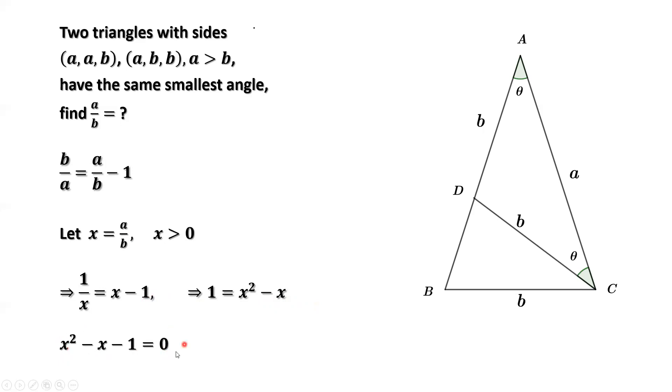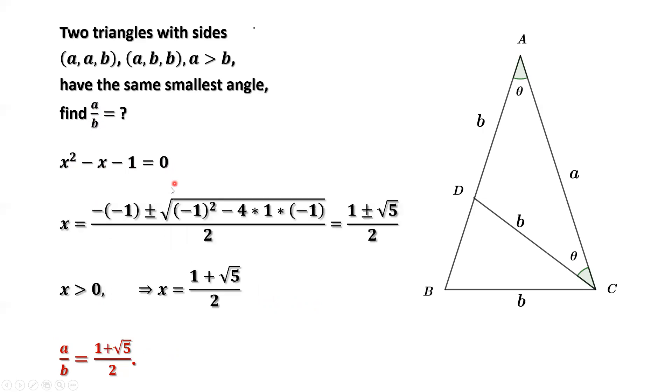We have x squared minus x minus 1 equals 0. This is a quadratic equation. What is x? X is a over b. This is the ratio we want to find. So here, x squared minus x minus 1 equals 0. Use the quadratic formula to solve it. We have two answers here, one is positive, one is negative. Because x is positive, we only take the positive one.